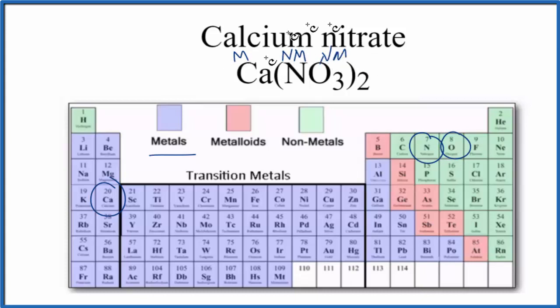So we have a metal plus nonmetals, that is an ionic compound. So calcium nitrate is an ionic compound overall.